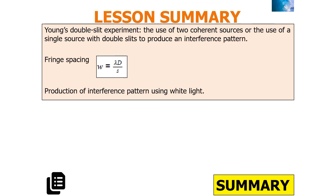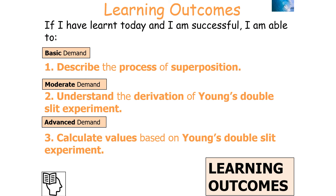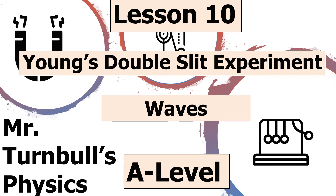In this lesson we've looked at the Young's Double Slit Experiment — the use of two coherent sources or a single source with double slits to produce an interference pattern. We can calculate the fringe spacing using W equals lambda D over S, and we understand what the interference pattern would look like if white light is used. We should now be able to describe the process of superposition, understand the derivation of the Young's Double Slit Experiment, and calculate values based on it. Thank you for watching this video on the Young's Double Slit Experiment, part of the waves topic for AQA A-level physics.